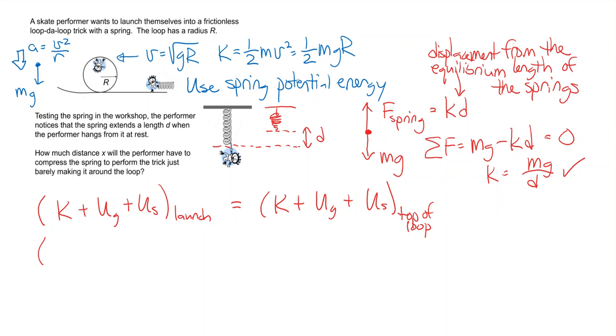The kinetic energy at the launch is, well, what we mean by the launch is just before the launch, just before you let go when all the potential energy is stored in the spring, so this is zero. If we let y equals zero be down here on the ground, we can also call that zero. The spring has one half k, this was apparently x, the distance you have to compress the spring, one half kx squared.